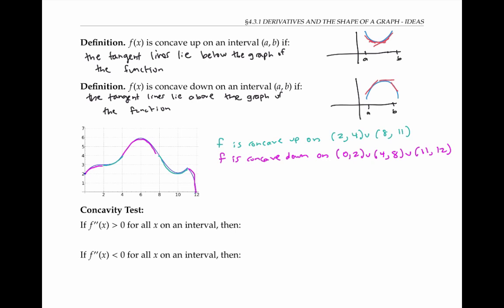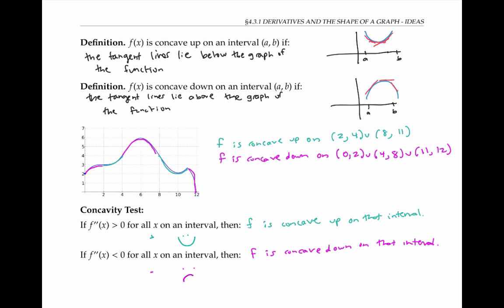In general, we can use the second derivative to predict the concavity of a function. The concavity test says that if the second derivative is positive for all x on an interval, then the function f is concave up on that interval. Similarly, if the second derivative is negative for all x on an interval, then the function f is concave down on that interval. One way to remember the concavity test is that a positive second derivative gives us a happy face — the smile represents a concave up function — and a negative second derivative gives us a sad face, where the frown is a concave down function.